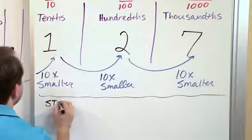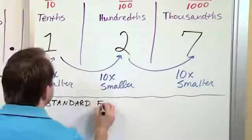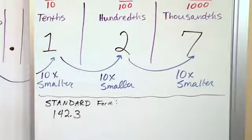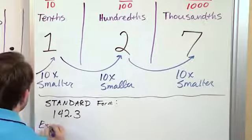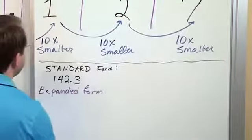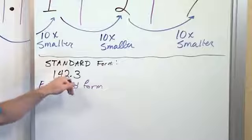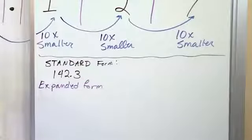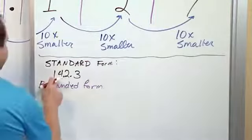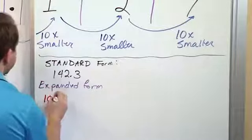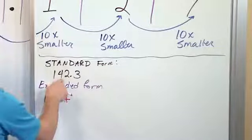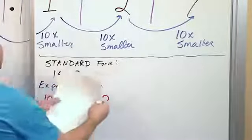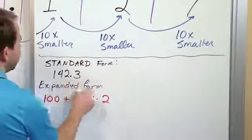When we write a number in standard form, something like 142.3, you might be asked to write it in expanded form. What we want to do is write down the value of each digit and show that we understand what that means. Since there's a one in the hundreds place, this is 100. The four is in the tens place, so it's worth 40. The two is in the ones place, so it's worth two. If there was nothing on the right-hand side of the decimal, it would be 142.